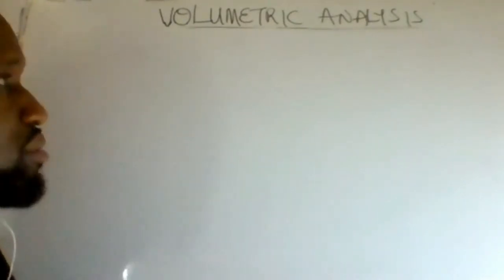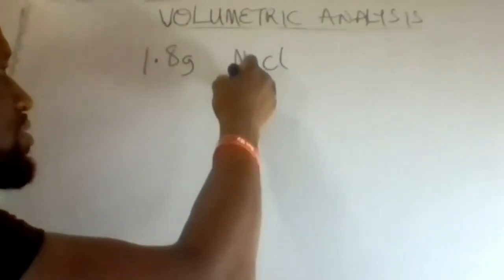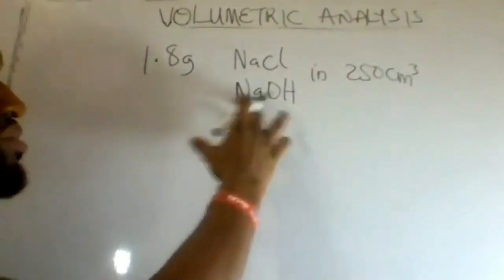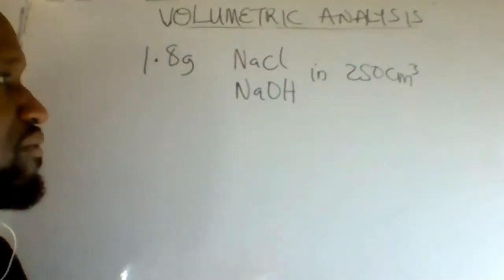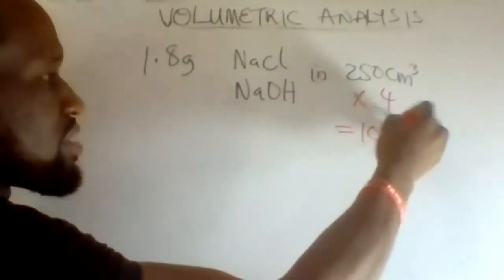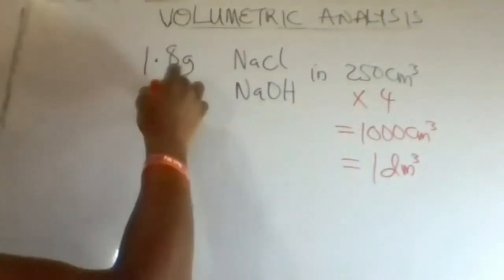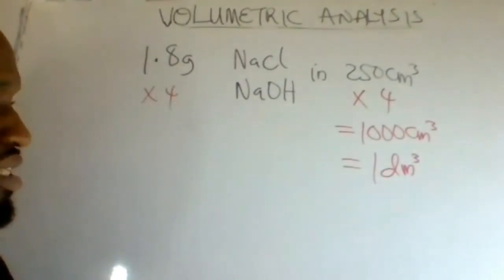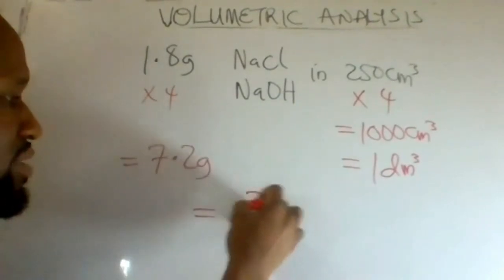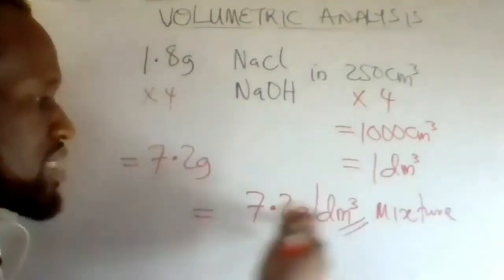The first line of the question gave us 1.8 grams of a mixture of sodium chloride and sodium hydroxide in 250 cm³. Our 250 cm³ should be converted to 1,000 cm³, so we multiply by 4 to get 1,000 cm³, which is equivalent to 1 dm³. Therefore, 1.8 grams multiplied by 4 equals 7.2 grams. The mass concentration of the mixture is 7.2 grams per dm³.